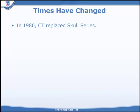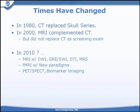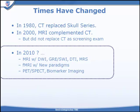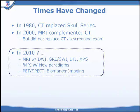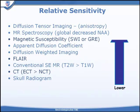Times have changed. In 1980, CT replaced the skull series. In 2000, MR began to complement CT, but it has not really replaced CT as a screening exam. Going into the future, we may find that specialized MR techniques have greater sensitivity and specificity in identifying the sequelae of traumatic brain injury, and we may end up using those as our primary imaging techniques.